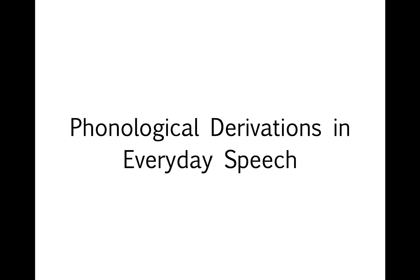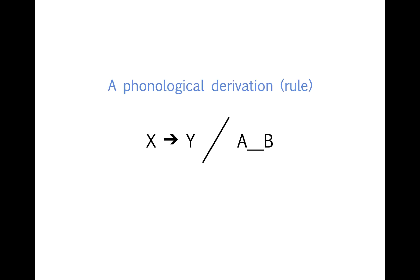The last unit showed us how we can use the formal notation of a derivation, or a rule, to represent what's happening in the mental grammar of a speaker as they use their language. In this unit, we'll look at some of the processes that we use really frequently when we speak English and how they can be represented with phonological rules.